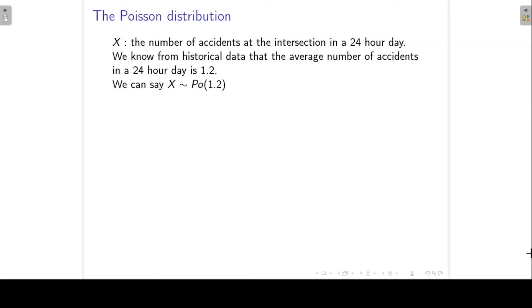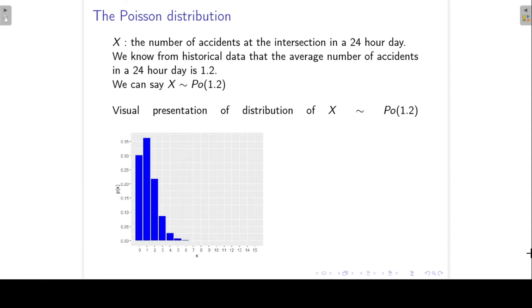To get back to our example, if x is the number of accidents at the intersection in a 24-hour day, suppose now from historical data that we know that the average number of accidents in a 24-hour day is 1.2. Then we can say that x follows a Poisson distribution with parameter 1.2. And a visual presentation of this distribution is also provided on this slide.